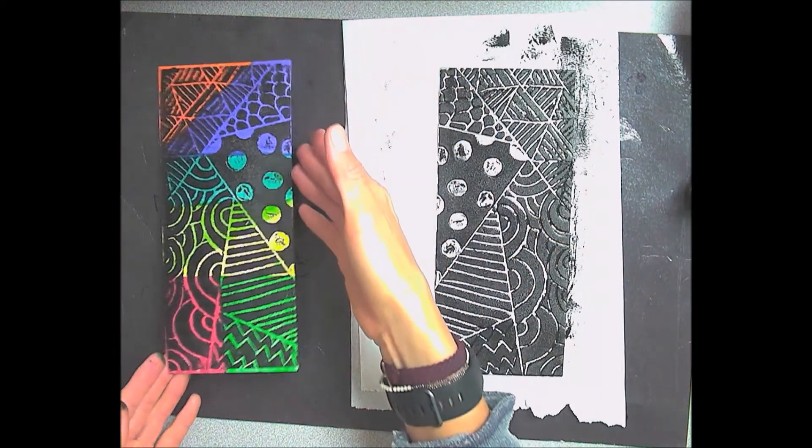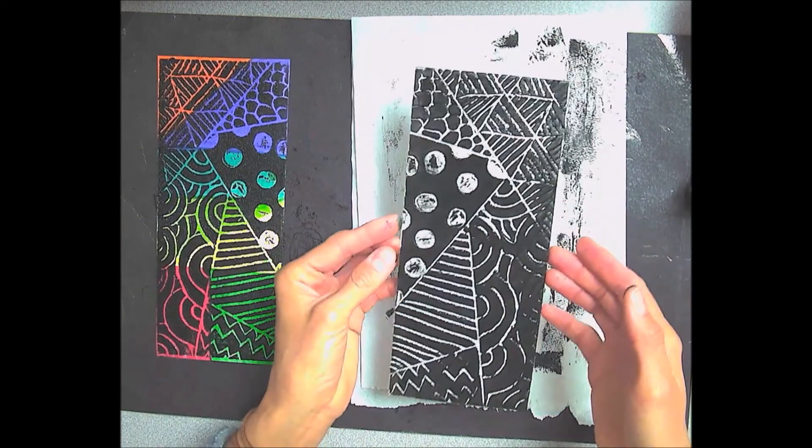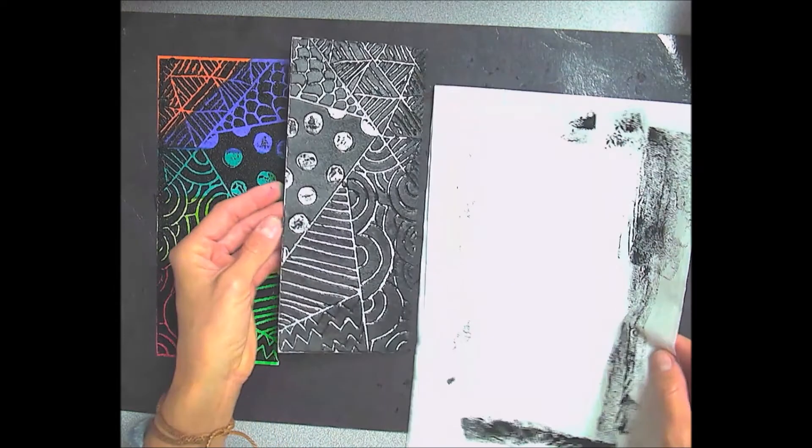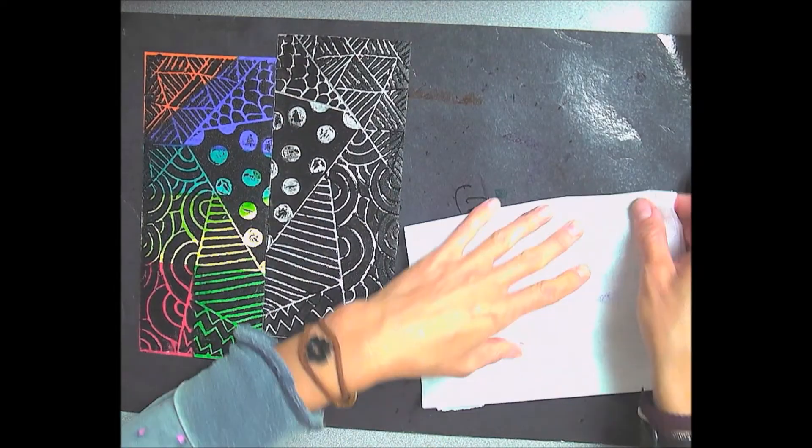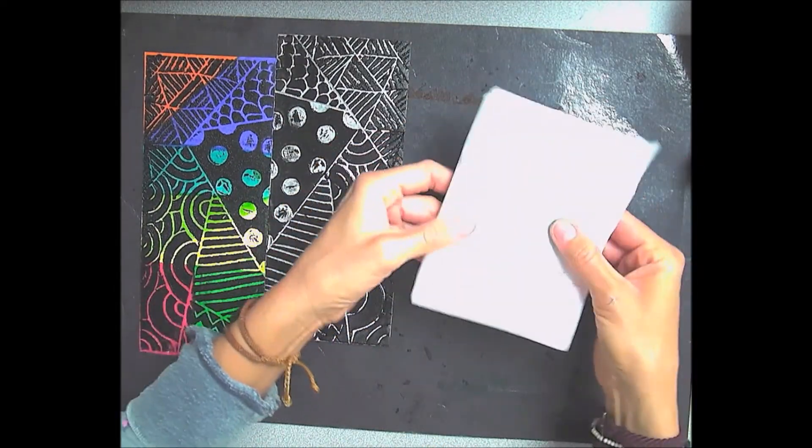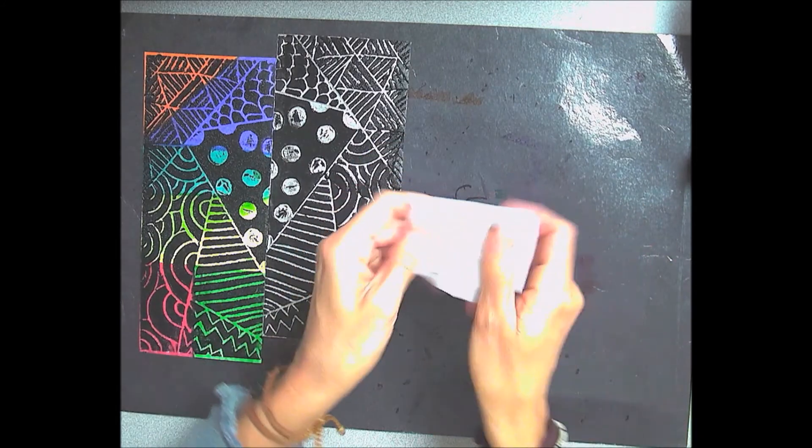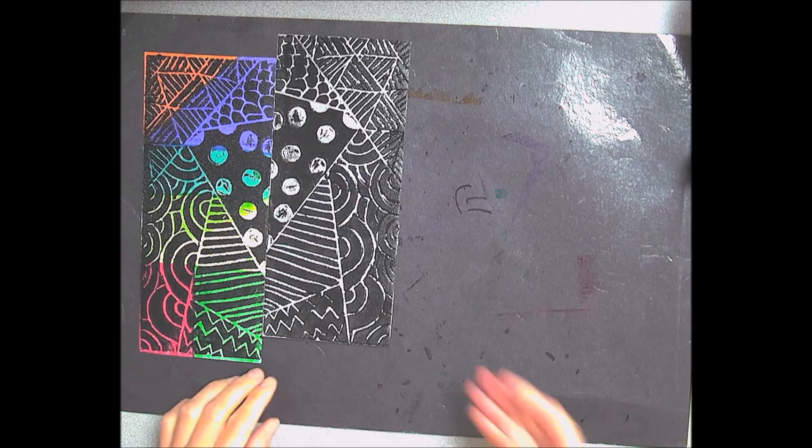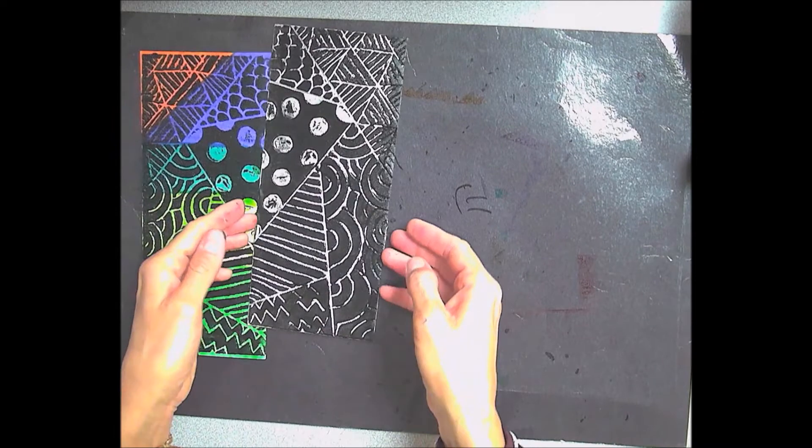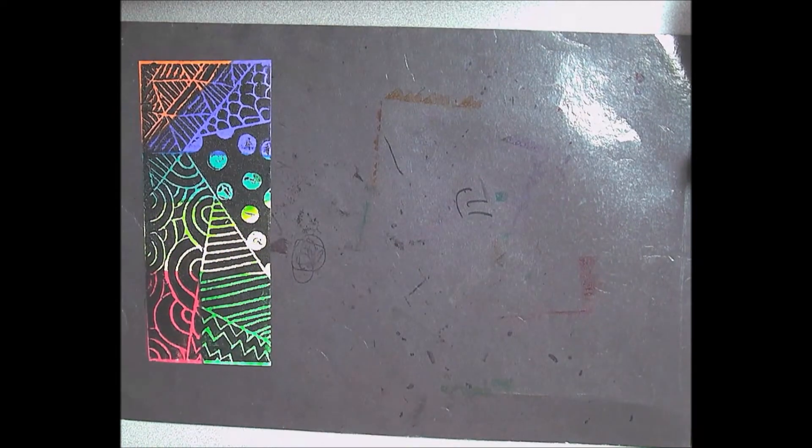Now it's time to clean your foam piece. You're going to take it to the sink and rinse it off with your thumbs. Make sure you fold up your old paper towel very gently because you don't want ink to go anywhere. Throw it away and rinse off your foam piece. You do not need to use soap.